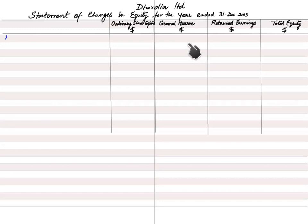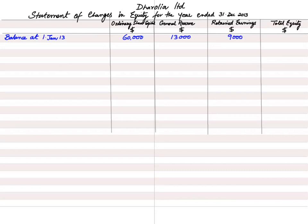We are making the statement of changes in equity for the year ending 31 December 2013, so we start at 1 January 2013 with opening balances. The 2012 closing balances become the 2013 opening balances: ordinary share capital $60,000, general reserve $13,000, and retained earnings $9,000, giving a total equity opening balance.